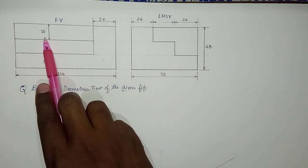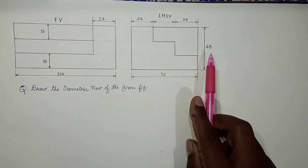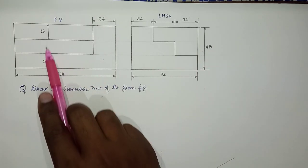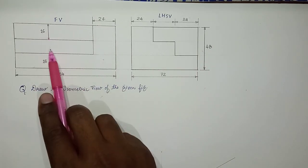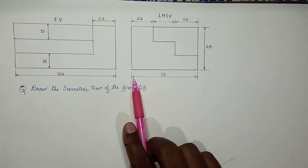48 - 16, 16, 16, three 16s are 48. That means each section is of 16 mm, and then this is the width.